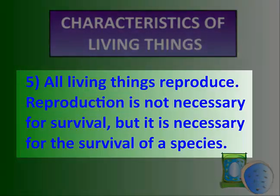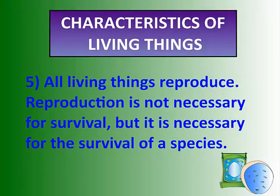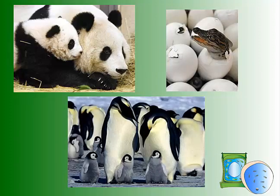Characteristic number five: all living things reproduce. Reproduction, however, is not necessary for individual survival, but is necessary for survival of the species. Adults don't have to have kids to reach the age of 60 and live a full life, but some of the species has to reproduce for survival of the species. Here are some images of parents in the wild.